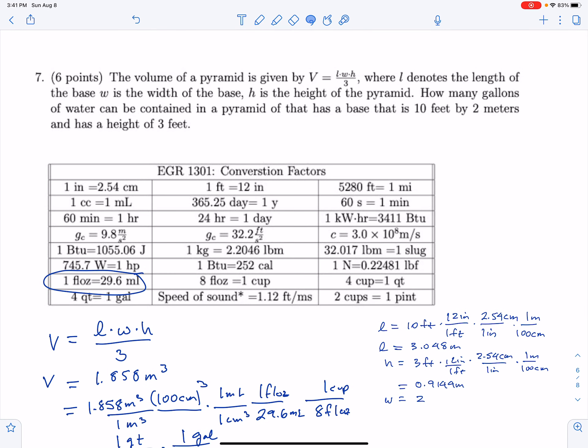In this video I'm going to cover problems seven and eight from the 2020 summer engineering 1301 final. In problem number seven, we're looking for the volume of a pyramid and we want to report the answer in gallons.